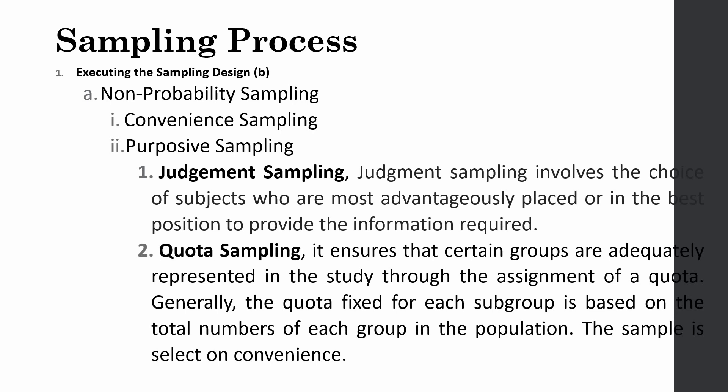And the second one is quota sampling. It's just similar to what we did in stratified random sampling. But there in each strata we did simple random sampling. Here we want to ensure that certain groups are adequately represented in the study, just as we did in stratified random sampling. But here we will use convenience sampling to draw the elements from the population to be the subjects in our sample. So this is how you can use the sampling process to draw your sample.